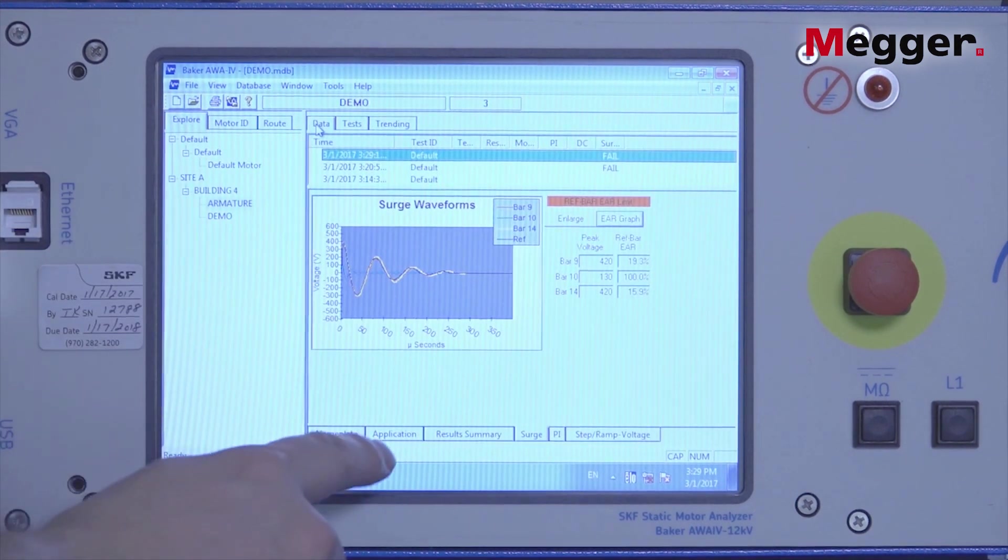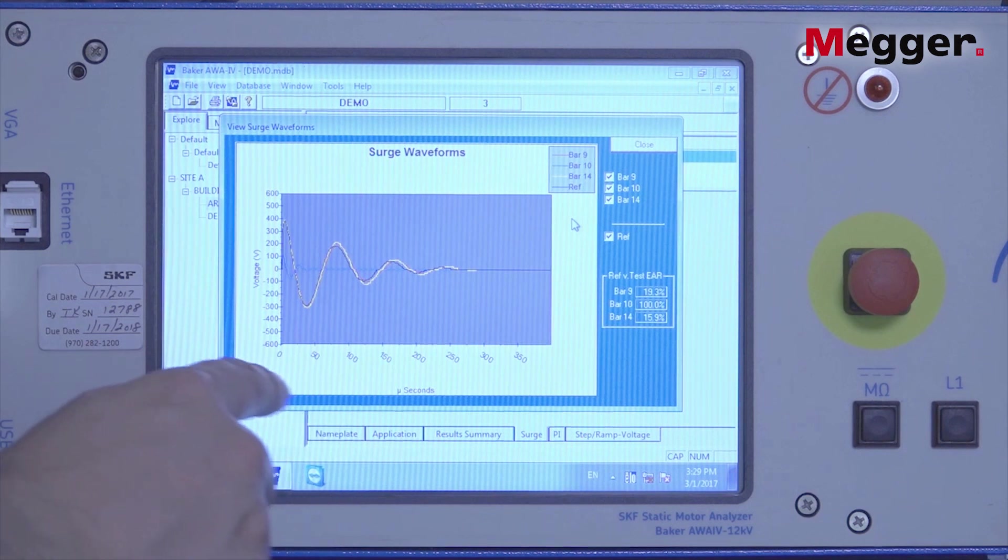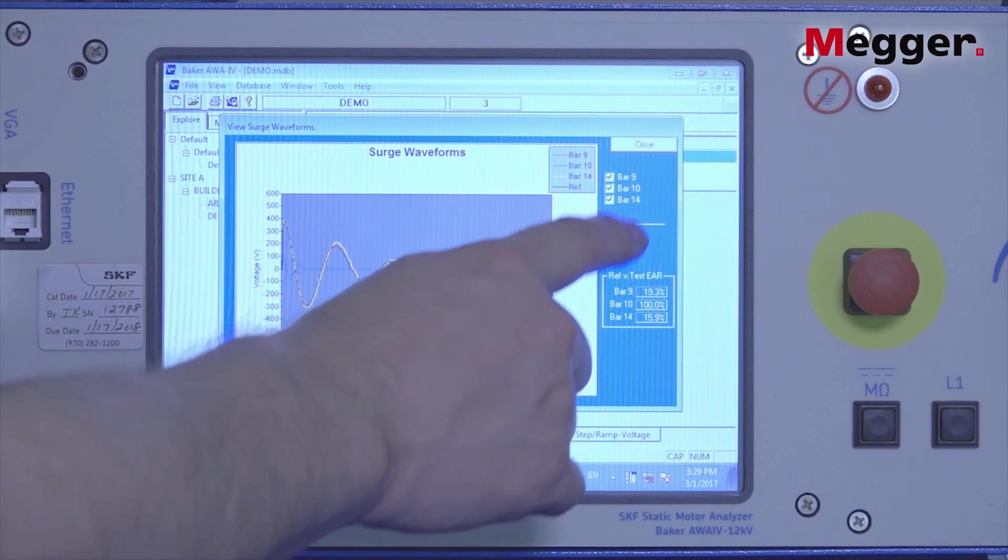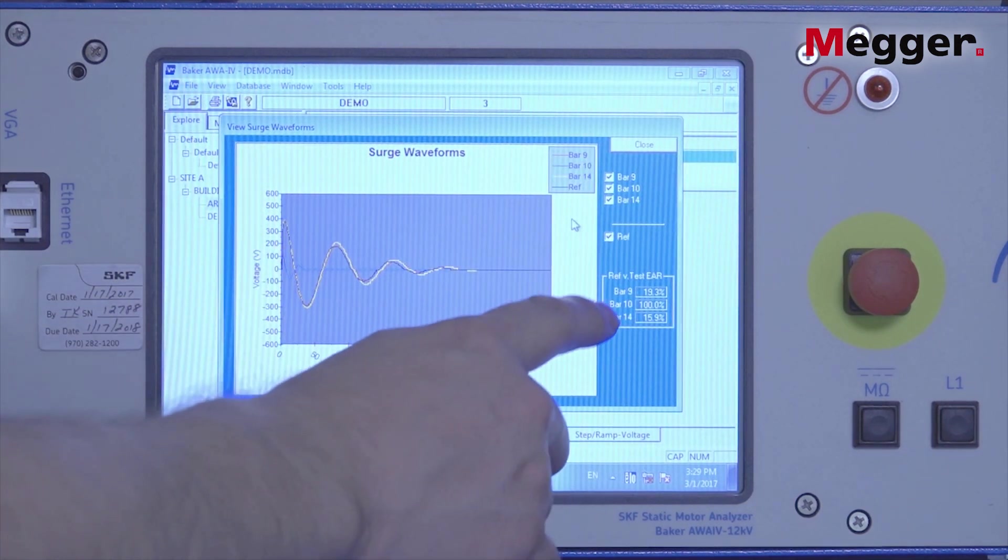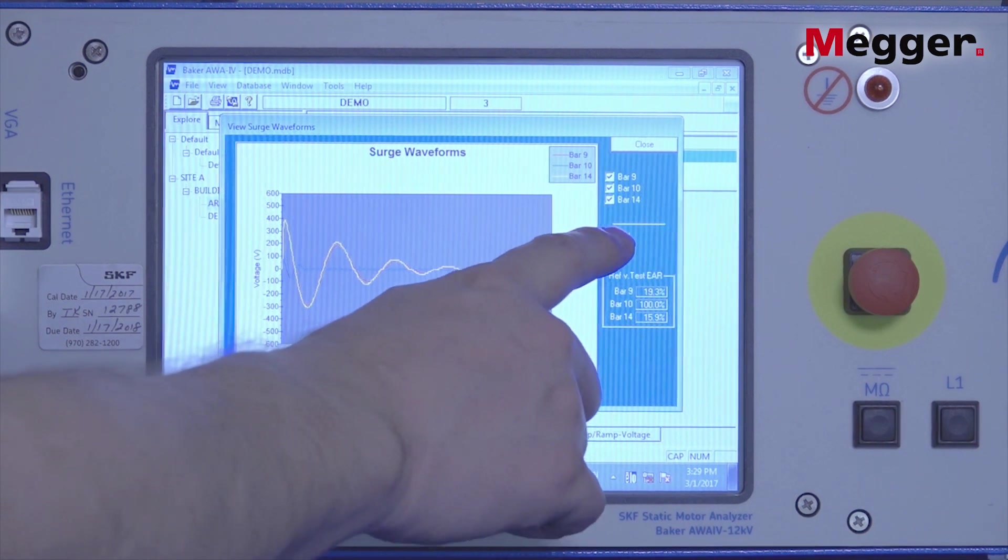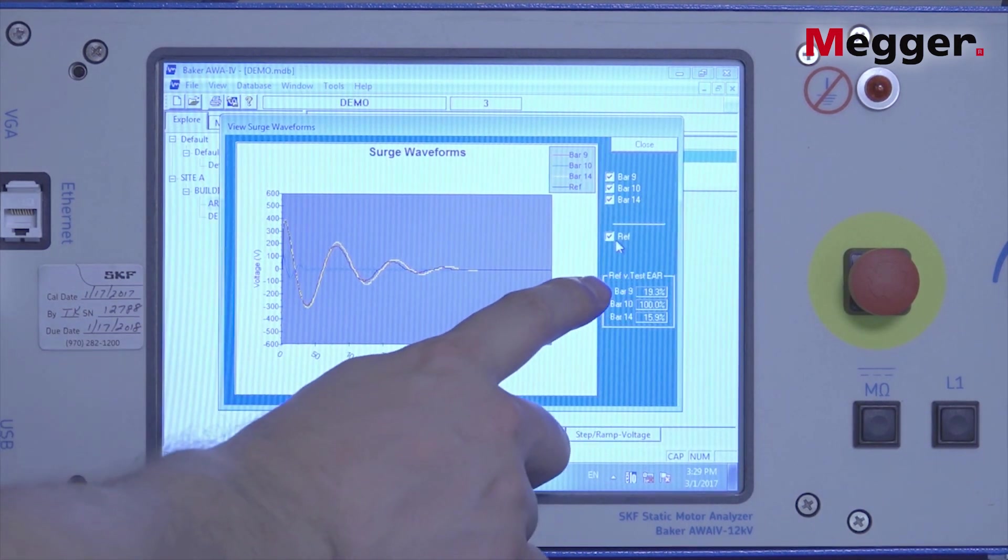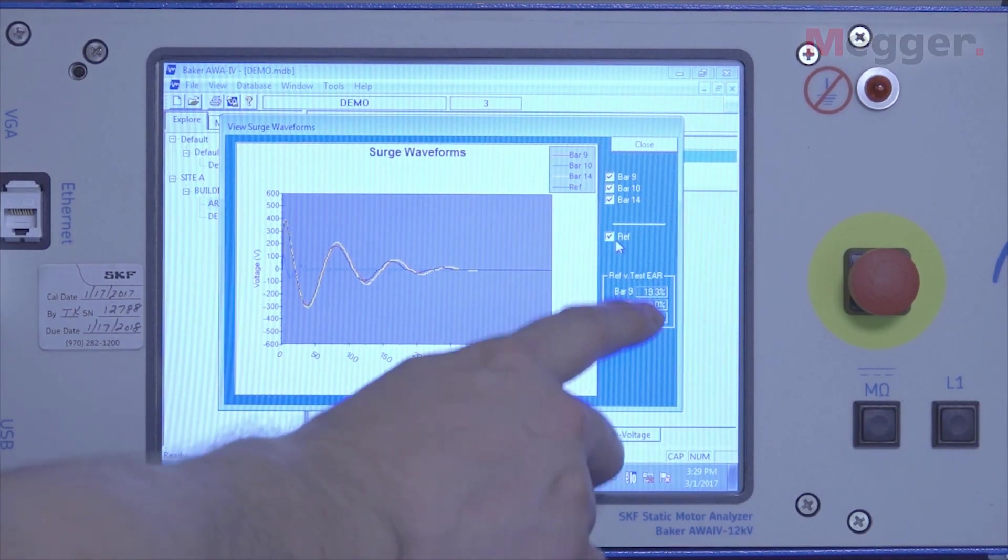Then you can go back to your data and view all the waveforms that you saved, as well as include the reference as a comparison. On the bottom here we have the reference versus the test EAR percentage.